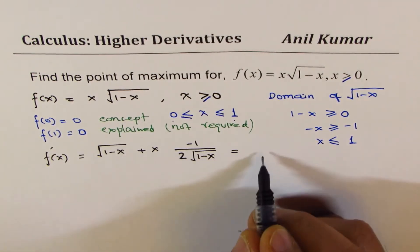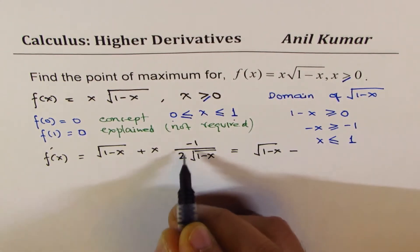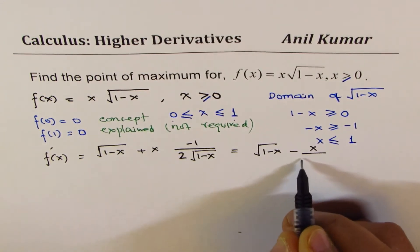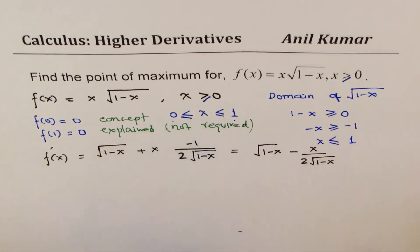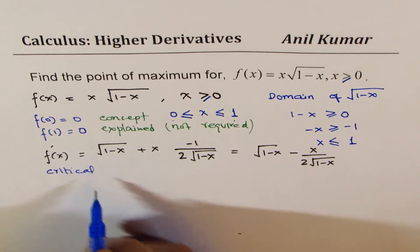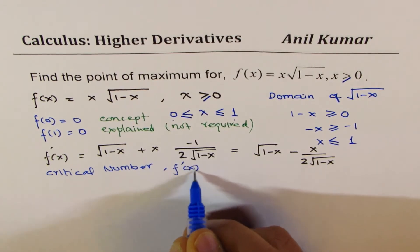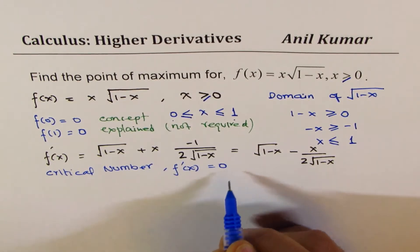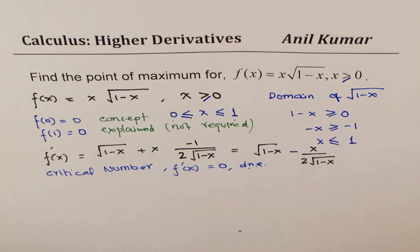Simplifying, the first derivative is √(1−x) − x / (2√(1−x)). For a maximum or minimum we find the critical numbers, meaning we set f'(x) = 0 or find where it does not exist.